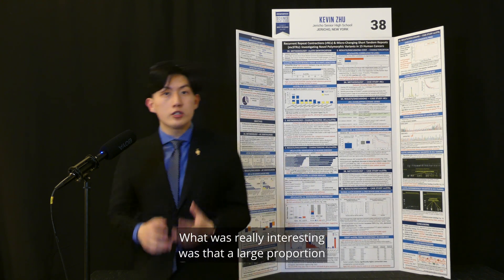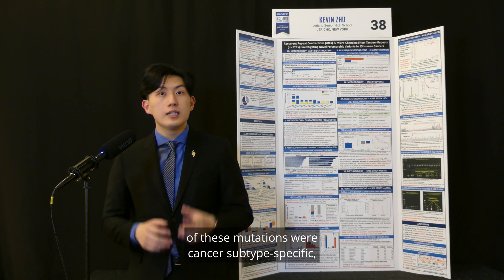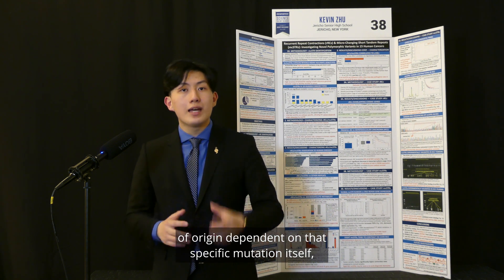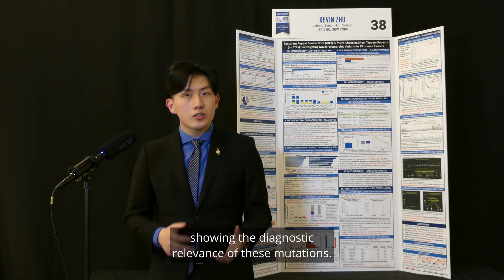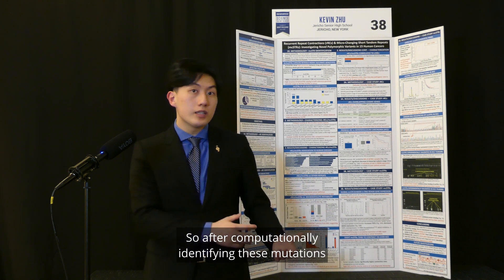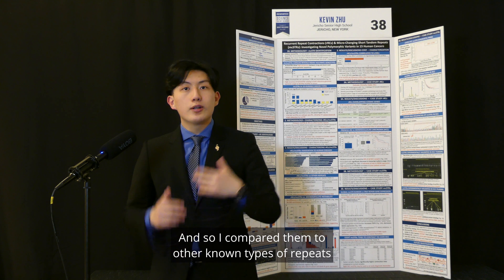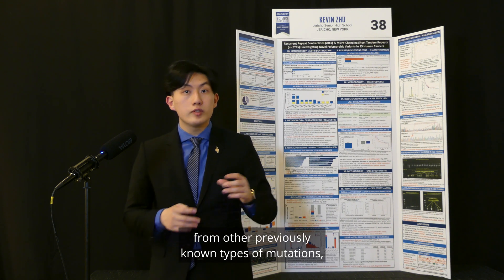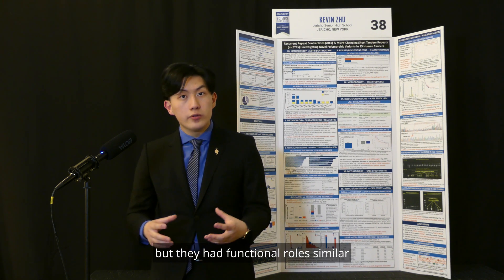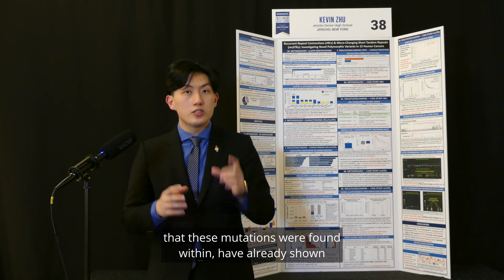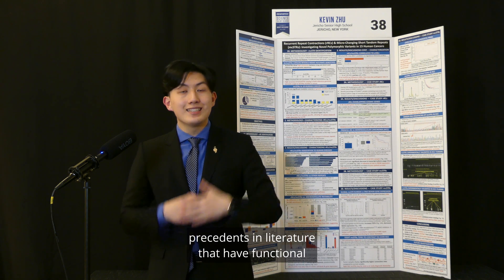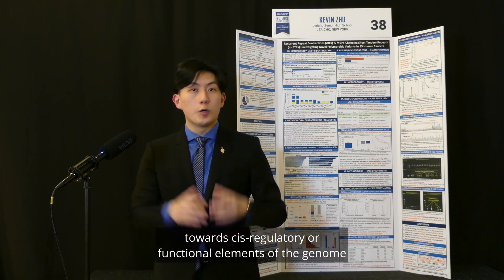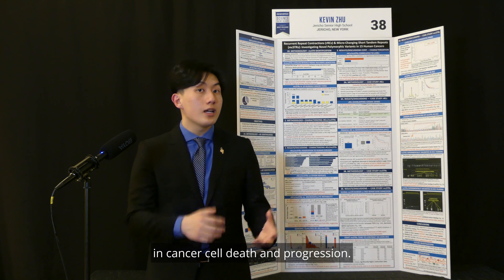What was really interesting was that a large proportion of these mutations were cancer subtype-specific, essentially meaning they would only occur in one type of cancer, allowing us to determine the tissue of origin or cancer of origin dependent on that specific mutation, showing the diagnostic relevance of these mutations. I then compared them to other known types of repeats and mutations in cancer as well as outside of cancer, and found that these mutations were distinct from previously known mutation types, but had functional roles similar to those known in cancer. The genes containing these mutations have shown precedence in literature for functional and therapeutic roles in cancer, and these mutations occur closer towards dysregulatory or functional elements of the genome than expected by chance, meaning they could play roles in cancer cell death and progression.